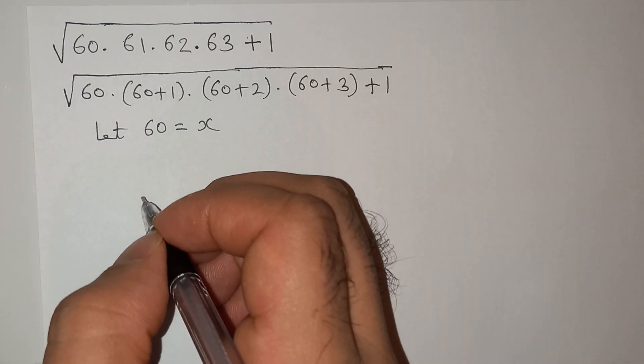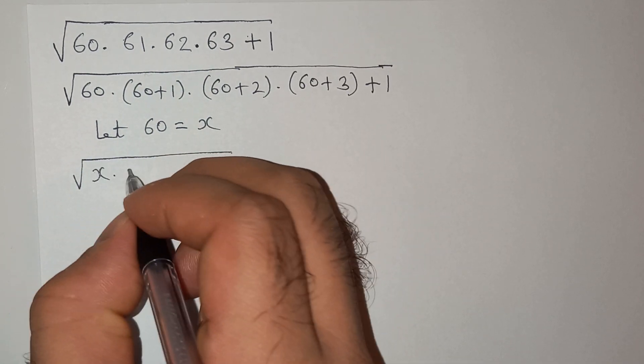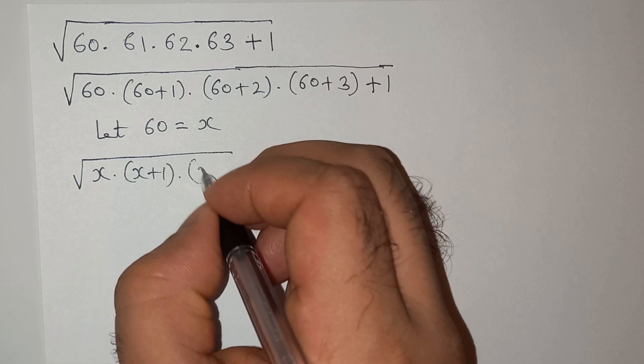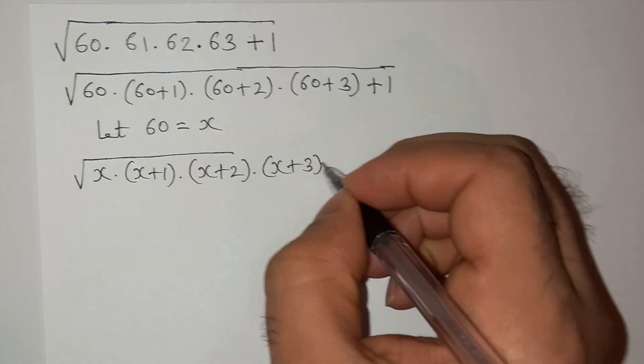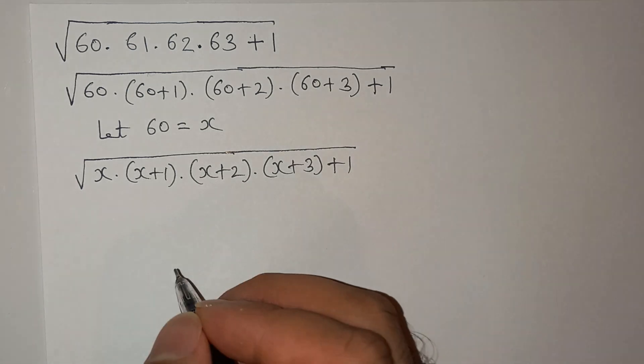So this will be x multiplied by (x+1) multiplied by (x+2) multiplied by (x+3) plus 1, right?